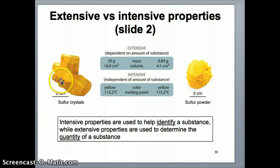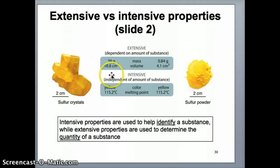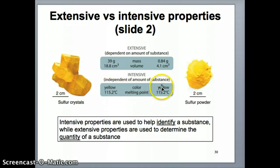Here are two types of sulfur: one is a sulfur crystal, the other is sulfur powder. Depending on the mass — one sample is 0.84 grams, the other is 39 grams — for the 39-gram sample the volume is 18.8 cubic centimeters, whereas for the smaller one it's only 4.1 cubic centimeters. So mass is clearly correlated with volume. On the other hand, the two intensive properties listed — color and melting point — are completely independent of mass. In both cases the color is yellow, and in both cases the melting point is 115.2 degrees Celsius, with no difference even though the mass is clearly different.